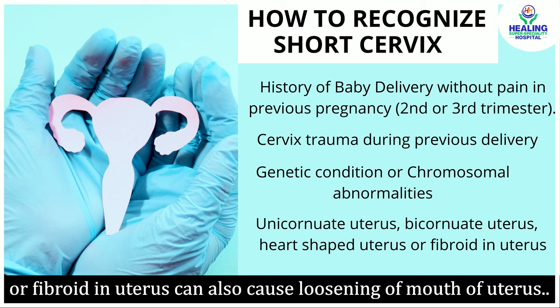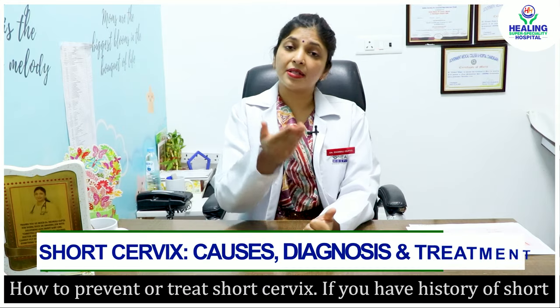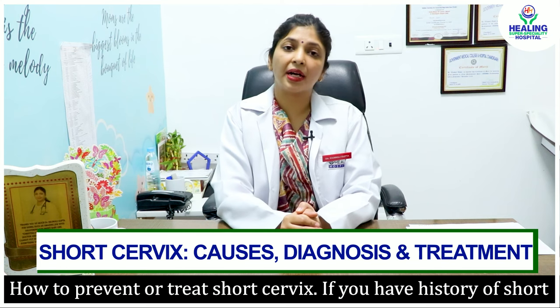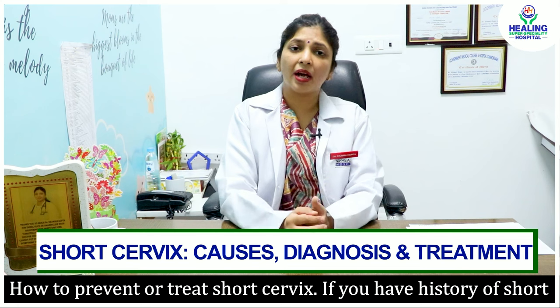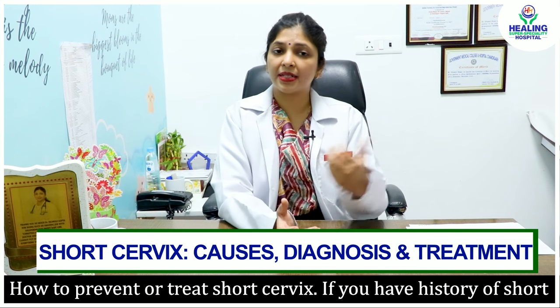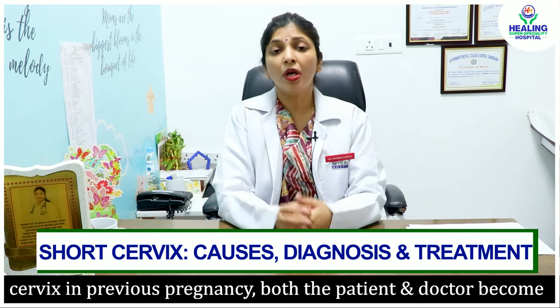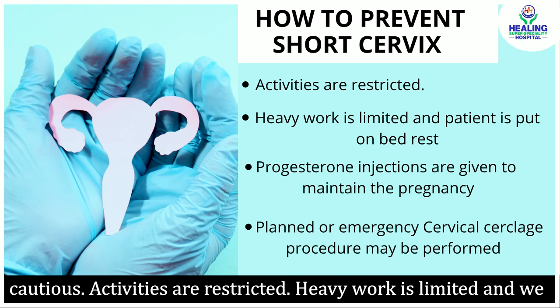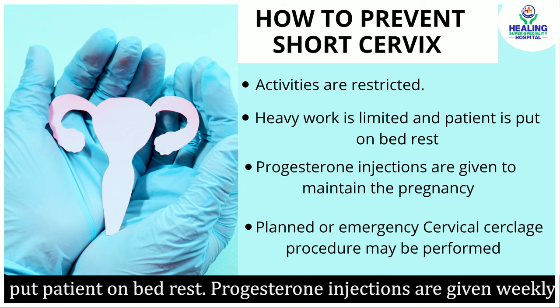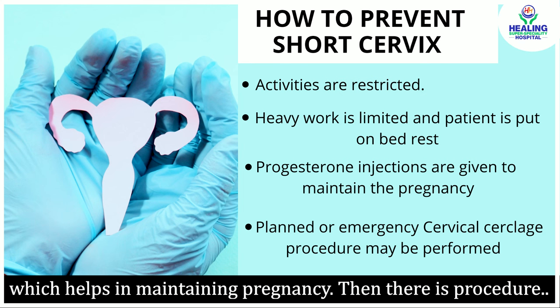Kahin uterus ka mouth bahut jaldi khulna shuru ho jata hai. Ab is ko treat karne ke liye ya prevent karne ke liye hum kya kar sakte hai — which is the most important question. Prevention: agar hume pata hai ki aapki pichli pregnancy mein aisi history rahi ho, to hum aapki activities restrict kar dete hai, heavy work bilkul limit kar dete hai, bed rest par rakhte hai. Phir progesterone ke injections hote hai — us hormone ke injection jo pregnancy ko tikaye rakhta hai — woh hum weekly dena shuru kar dete hai.